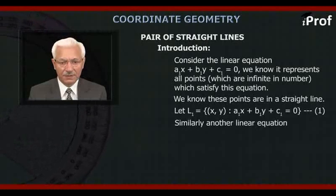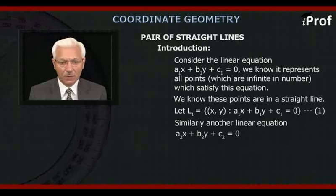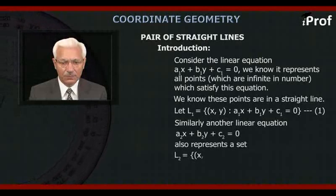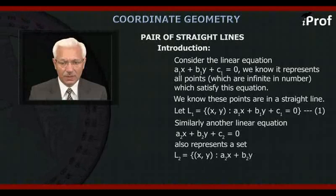Similarly, another straight line with equation a₂x plus b₂y plus c₂ equal to 0 also represents a set. Let L₂ = {(x, y) : a₂x + b₂y + c₂ = 0}. Let's call it equation 2.